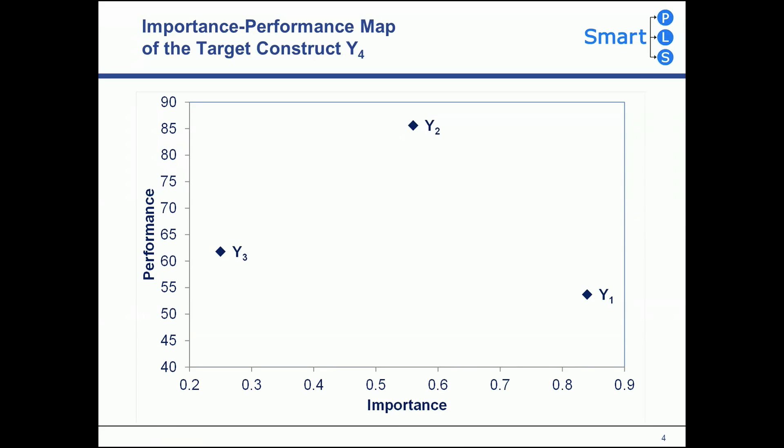Now we select the key target construct of the analysis and combine the importance and performance information in the importance performance map. On the x-axis we see the importance. On the y-axis we see the performance of the latent variables on a scale from 0 to 100. Here we find that Y1 has a low performance while Y2 has a relatively high performance.